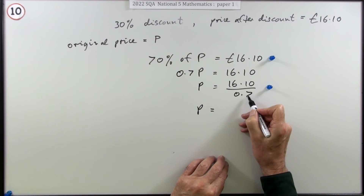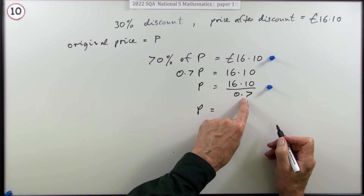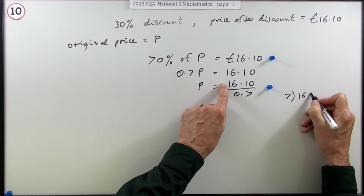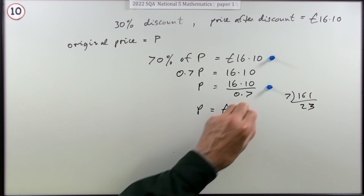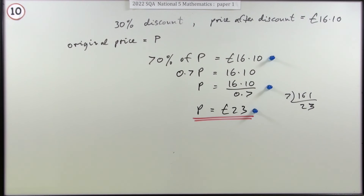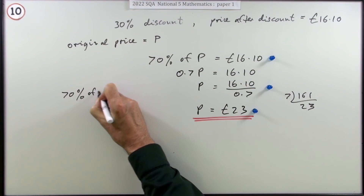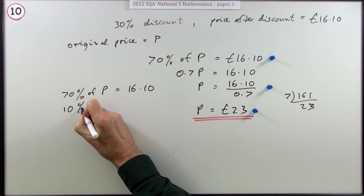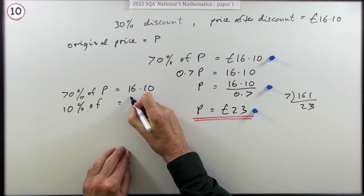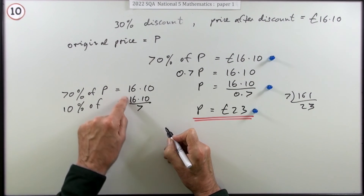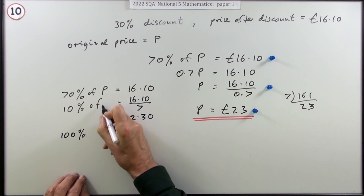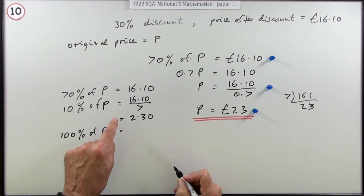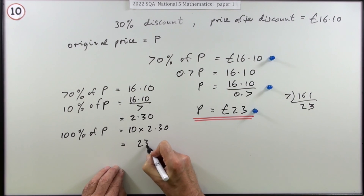Dividing by 0.7 — you don't want to divide by a decimal, so make everything 10 times bigger. What you're actually going to do is 7 into 161, which gives 23. So the original price was £23 — that gets the mark. Alternatively, if you said 70% of P equals £16.10, you could work out 10% first by dividing by 7, which gives £2.30, then multiply by 10 to get 100% — the original price — which is 10 times £2.30, giving £23.